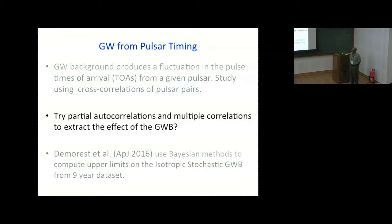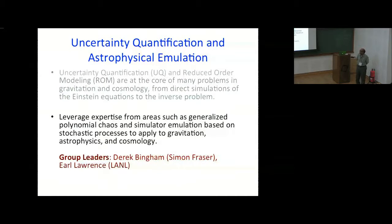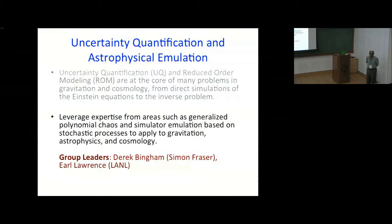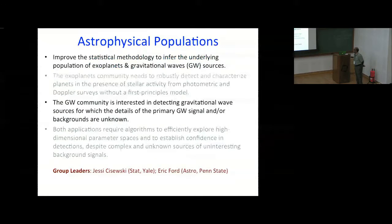Demorest used Bayesian measures to compute upper limits on the isotropic stochastic gravitational wave background from a nine-year data set — that appeared in 2016. Uncertainty quantification and astrophysical emulation is another working group, with group leaders Derek Bingham and Eric Lawrence — a very active group. Astrophysical population is another very active group, led by Eric Ford at Penn State and Jesse Cisewski, a statistician from Yale.